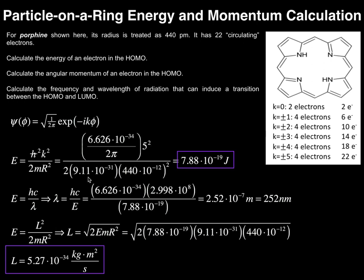Divided by 2, divided by the mass of the electron, 9.11 times 10 to the minus 31 in kilograms. Then we divide by the radius squared. Our radius is 440 picometers. We take that 440 and multiply by 10 to the minus 12 to convert to meters, then square that. When you do this calculation, you get that the energy of the HOMO is 7.88 times 10 to the minus 19 joules. That's the energy of electron number 22.